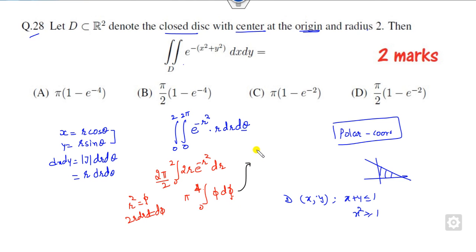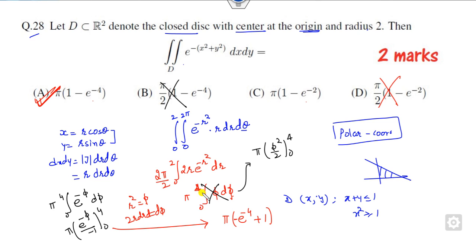What is the right answer? This is pi times the integral from 0 to 4 of e raised to power minus phi d phi. The answer is e raised to power minus phi upon minus 1 from 0 to 4. Firstly, it's pi, so two options cancel out. When you substitute the value at limit 4, this is e raised to power minus 4 minus plus 1, so 1 minus e raised to power minus 4 is the right answer.